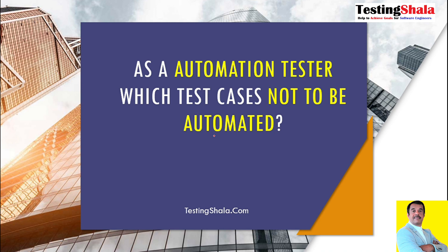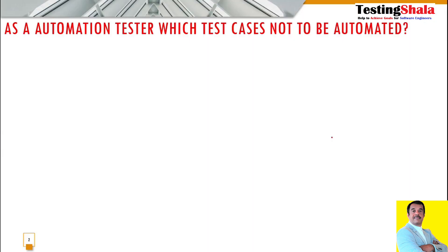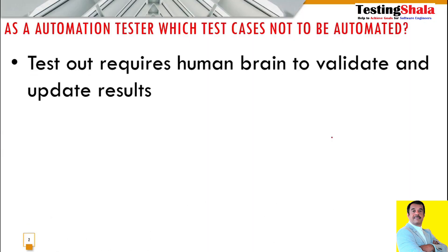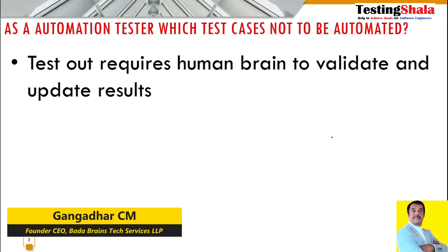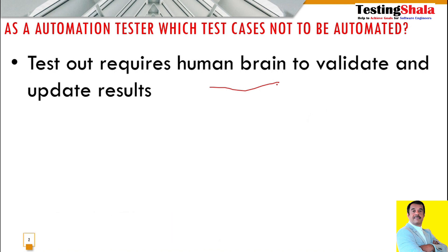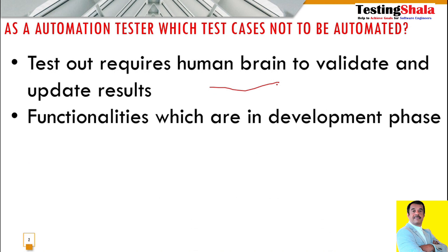As an automation tester, what kind of test cases are you not recommending for automation? The answer is: especially tests which require a human brain — wherever human judgment is required, where a human has to validate the given test case, we should not take those for automation. The second one is: any functionalities in the implementation or development phase where lots of changes are happening — those test cases you should also not pick for automation.